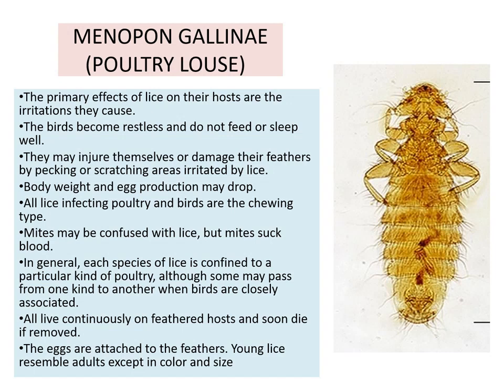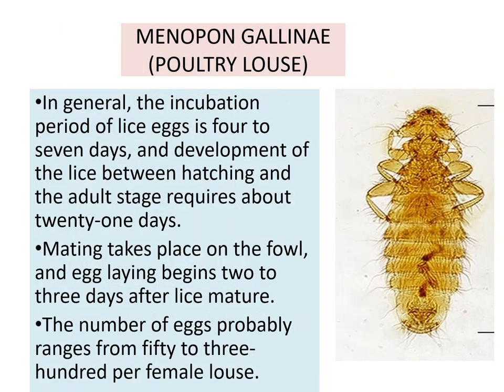All lice infecting poultry and birds are the chewing type. Mites may be confused with lice, but mites suck the blood. In general, each species of lice is confined to a particular kind of poultry, although some may pass from one kind to another when birds are closely associated. All lice live continuously on the feathered host and soon die if removed. The eggs are attached to the feathers. Young lice resemble adults except in color and size. The incubation period of lice eggs is 4 to 7 days, and development from hatching to adult stage requires about 21 days.